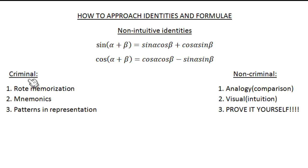So you start using methods which I call criminal. Number one method is rote memorization. That is when you try to remember the identities as it is and you try to memorize them through repetition. This is fine if you're trying to memorize your telephone number, but when you're doing mathematics you miss the point.